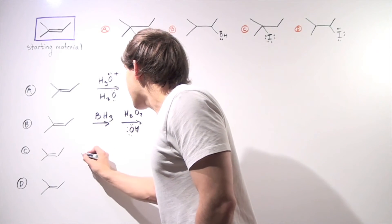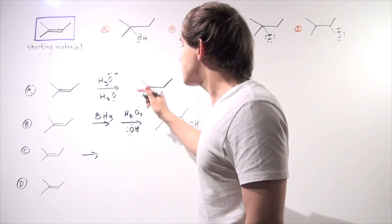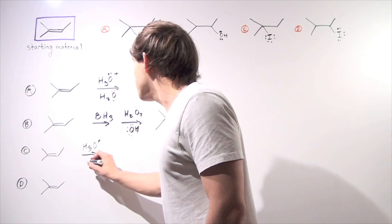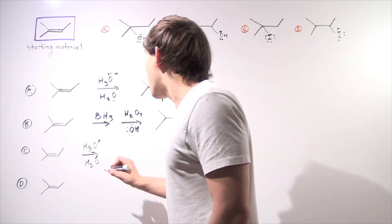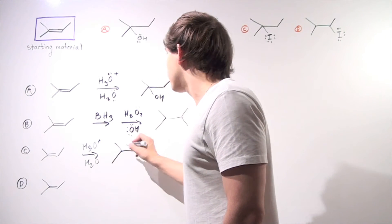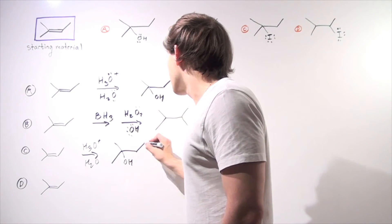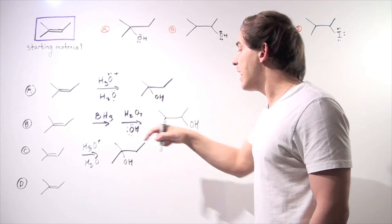If in the first step, we follow the first reaction, we add our trace amount of hydronium and the H2O molecule to produce our molecule from reaction A, we produce the following more substituted alcohol.